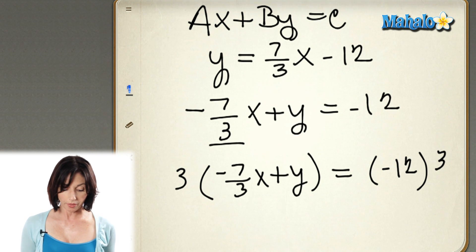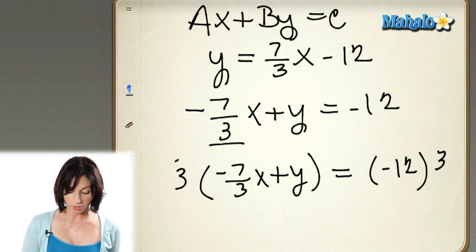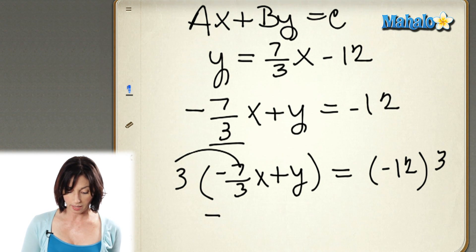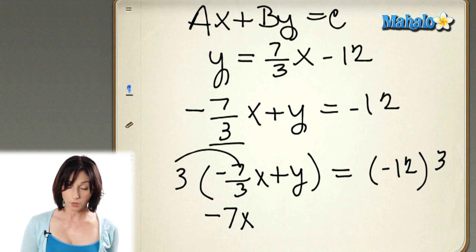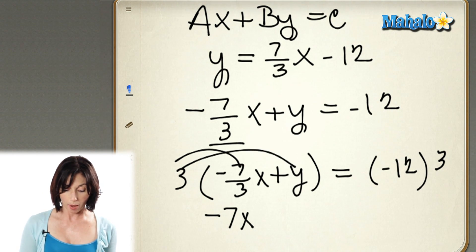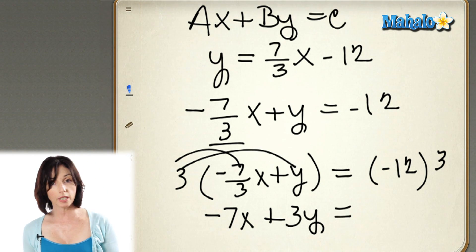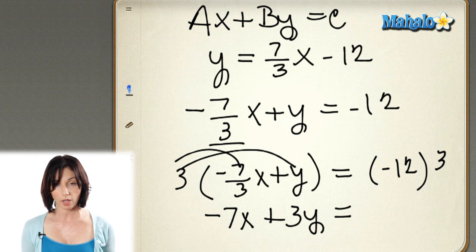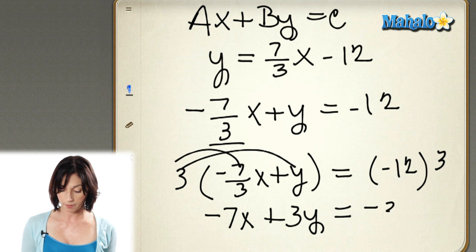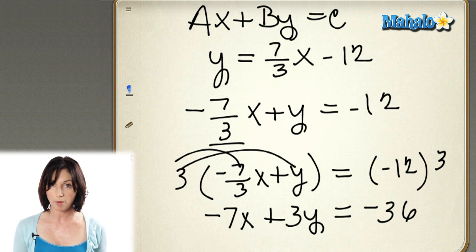On the left side of the equation, when I'm multiplying the x term, the 3's cancel out, and I get negative 7x. Don't forget, I also have to multiply y by that 3. So when I multiply positive y by positive 3, I get a plus 3y. And then on this side of the equation, negative 12 times 3 is negative 36. So it's looking pretty close to standard form.